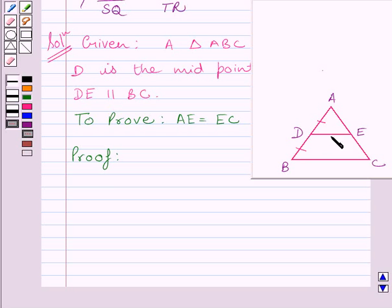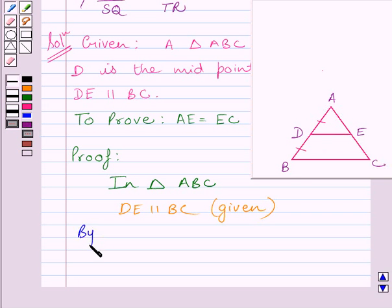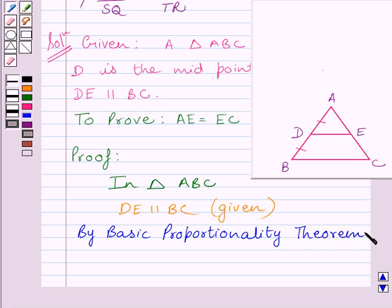Clearly we can see in triangle ABC, DE is parallel to BC. This is given. By basic proportionality theorem, DE will divide AB and AC in the same ratio. So we can write, AD upon DB is equal to AE upon EC. Let us name this expression as 1.